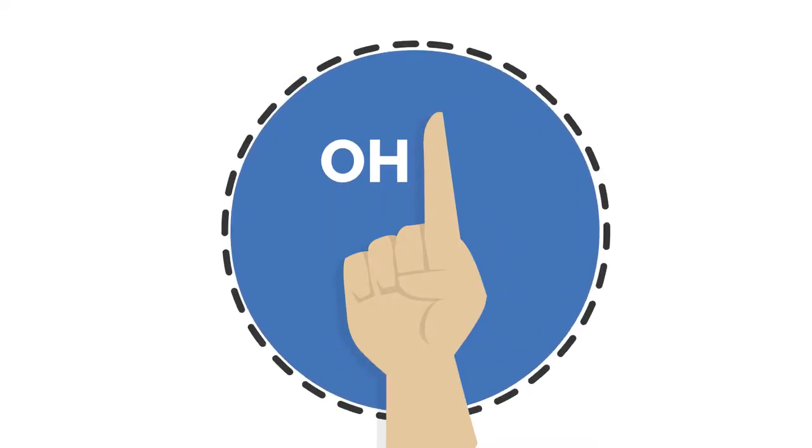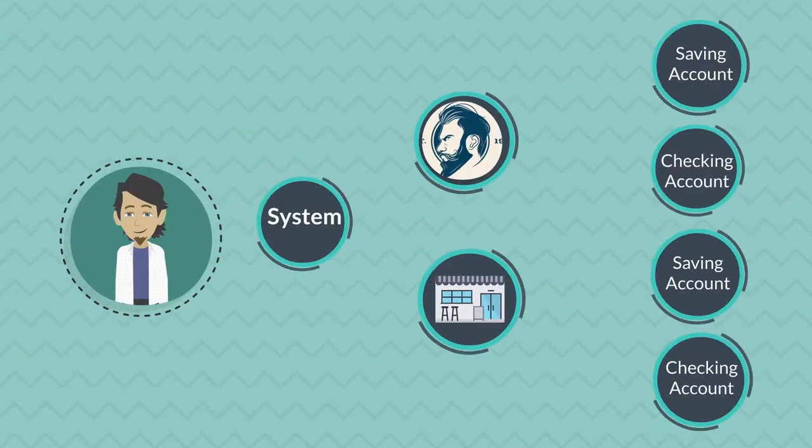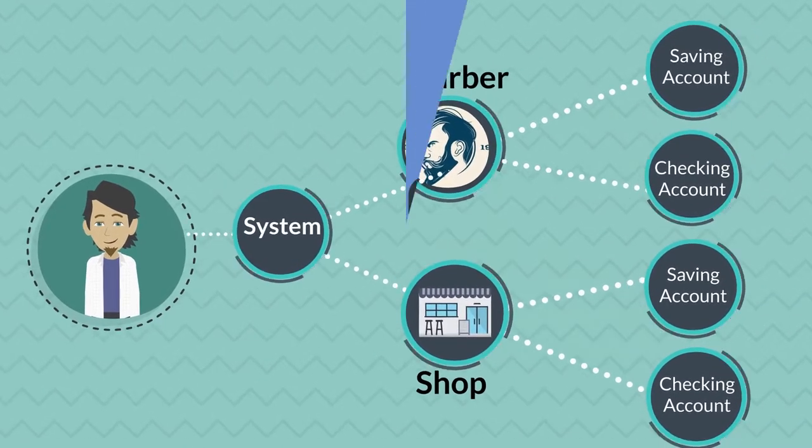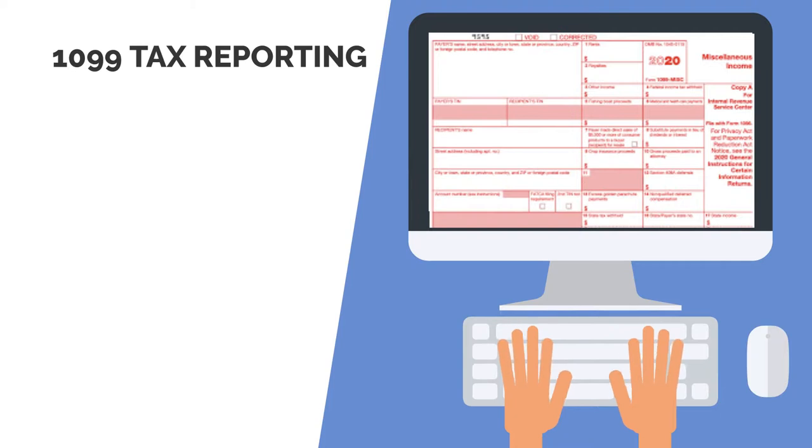Oh, one more thing. For multi-chair shops, we can do fund routing for you. So some can go right to the house, some can go to the barber. And at the end of the year, we can do 1099 tax reporting for you.